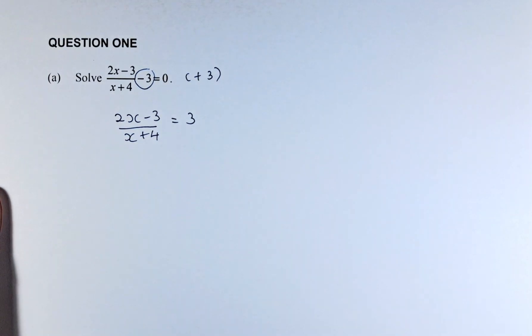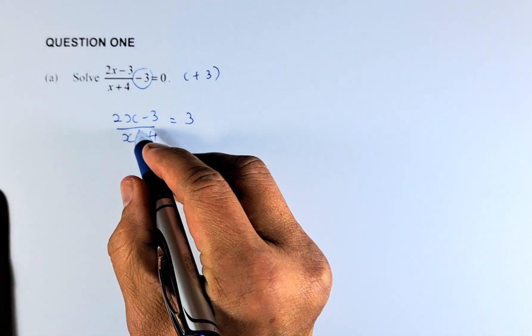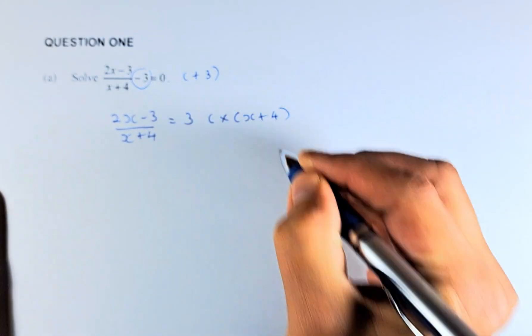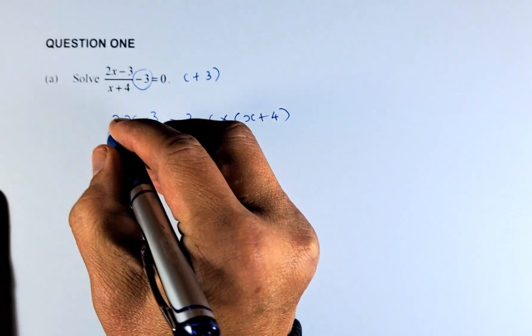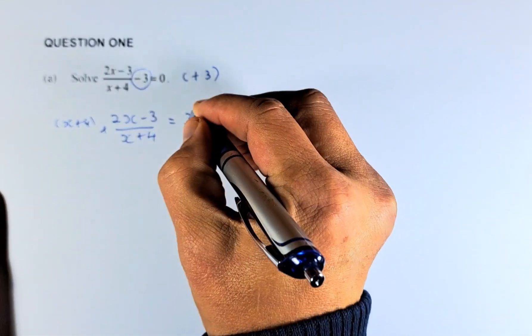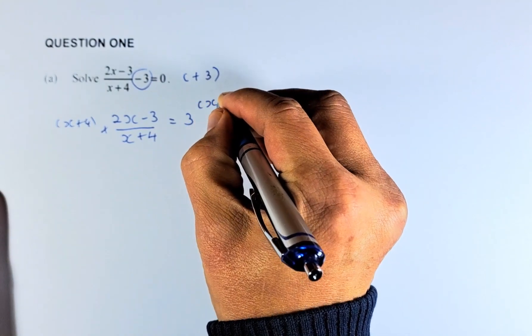Next, we are going to get rid of this x + 4. To do that, we're going to multiply x + 4 on both sides. So when we multiply x + 4 on both sides, we're going to multiply them and we're going to multiply by x + 4.